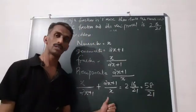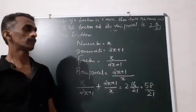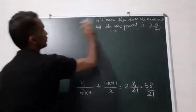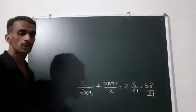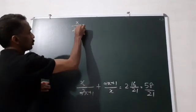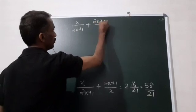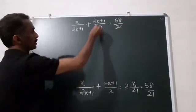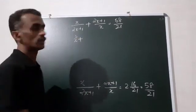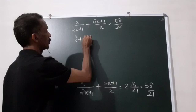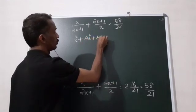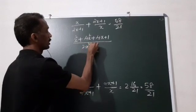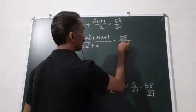Now we will simplify this equation. We have x/(2x+1) + (2x+1)/x = 58/21. Cross multiplying: x squared plus (2x+1) squared equals 4x squared plus 4x plus 1. Combined with the denominator gives 2x squared plus x equal to 58 divided by 21.